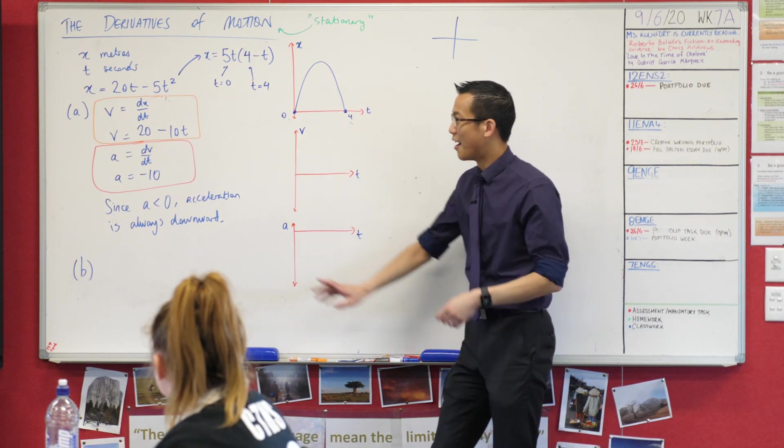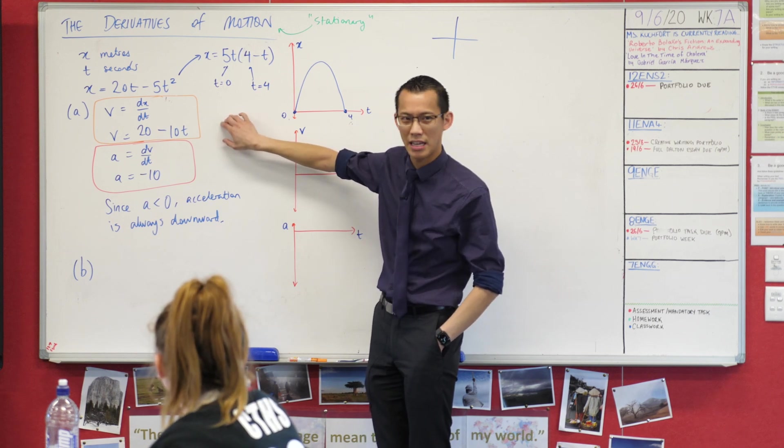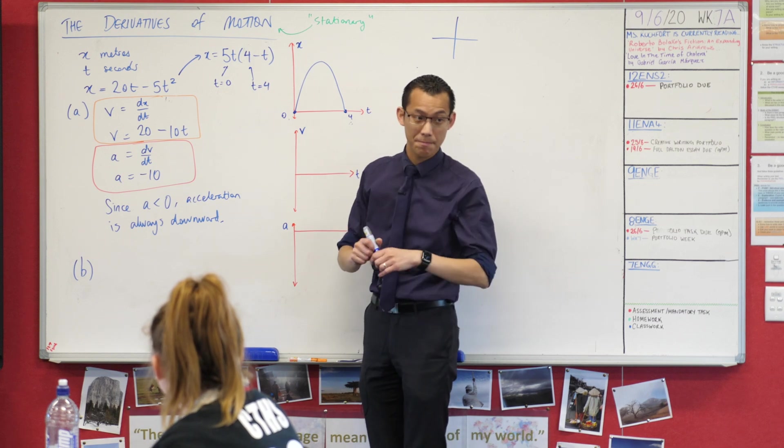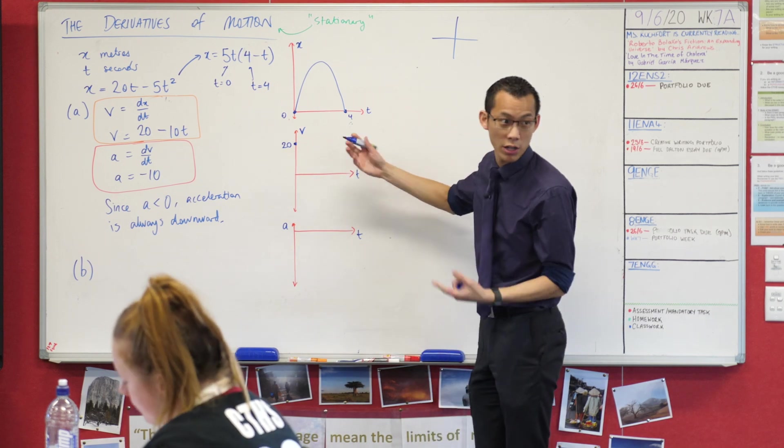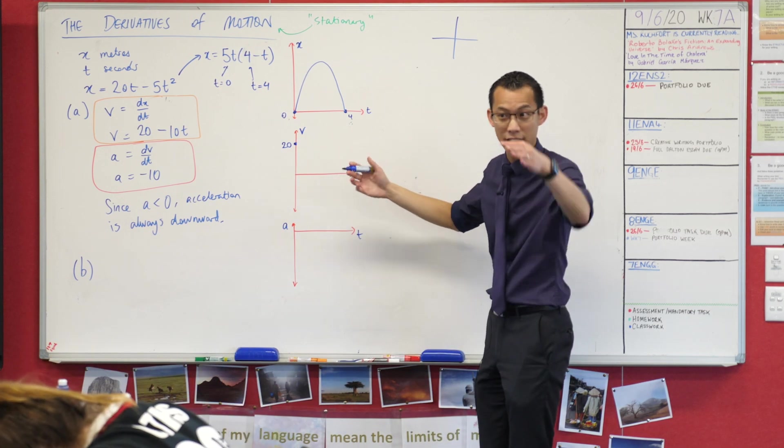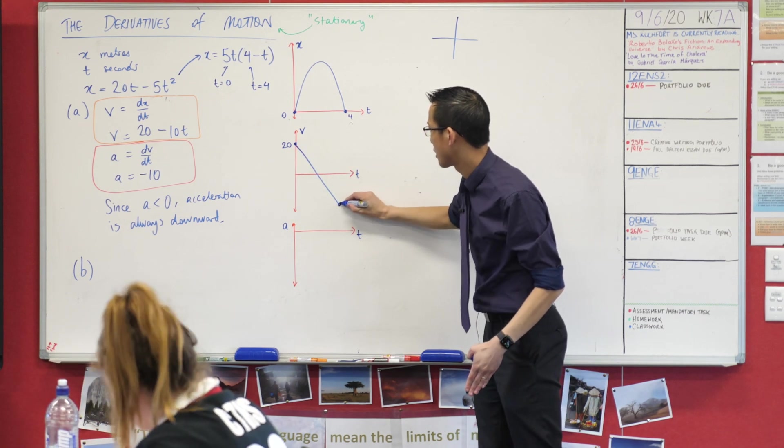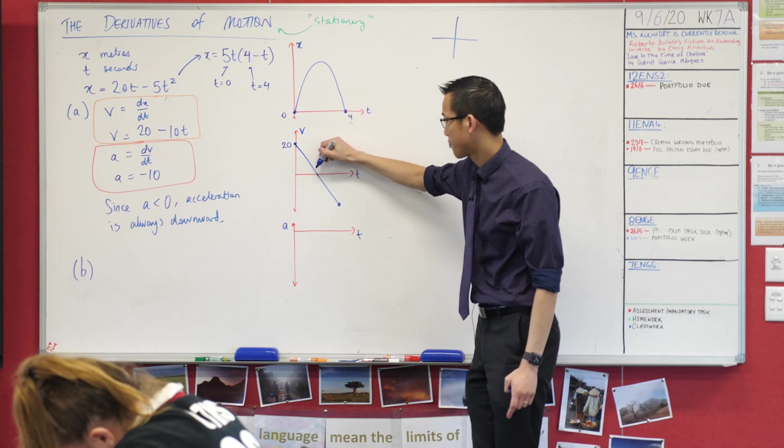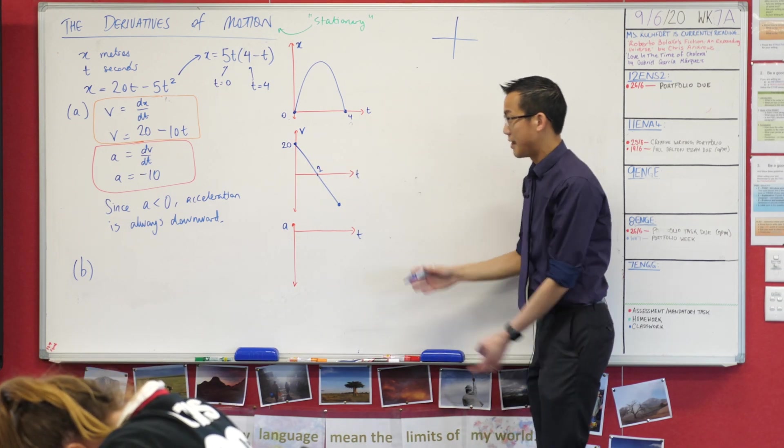Let's see if we can do our velocity graph, our velocity time graph. We differentiated, we got 20 minus 10t. What kind of graph does that look like? It's a straight line. Can you tell me any more about it? It's going to have an intercept at 20, that's good. And then what else can you tell me? I've got a gradient that's decreasing, very good. And it's just a straight line, so it goes like that. It has an intercept at two.